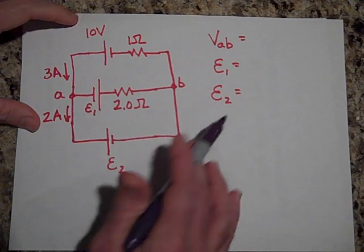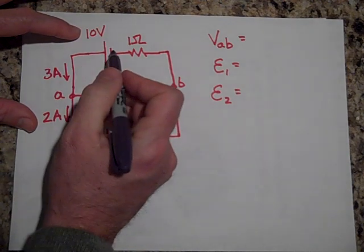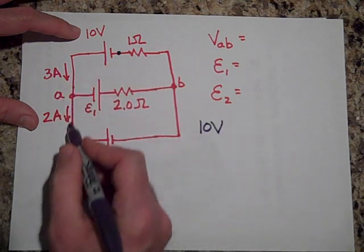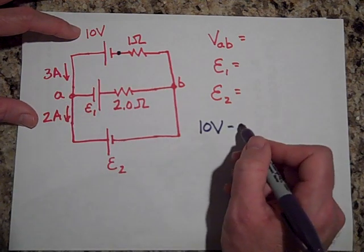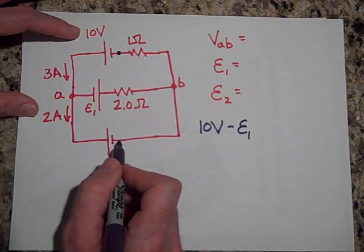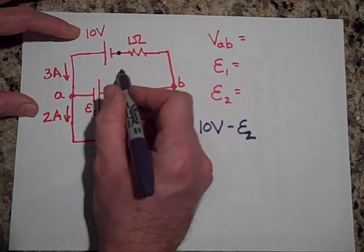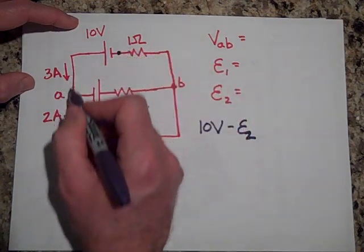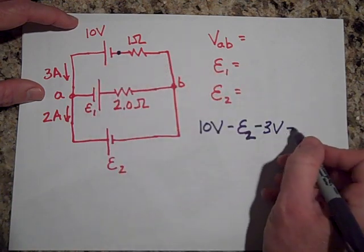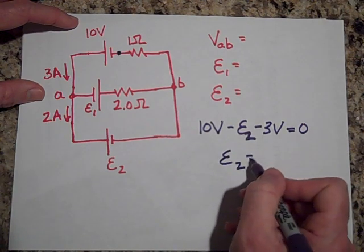To get E2, I'll take the loop around here. Starting here I go up 10 volts, then I come down E2 because I'm going the opposite way through the battery. Then going across the 1-ohm resistor with 3 amps gives minus 3 volts, because I'm going with the current. That equals zero, so E2 has to equal 7 volts.